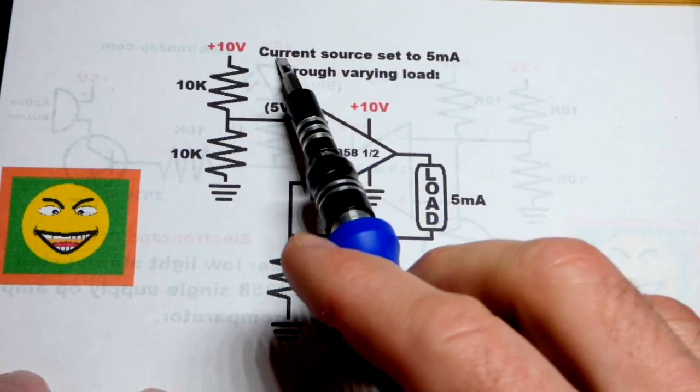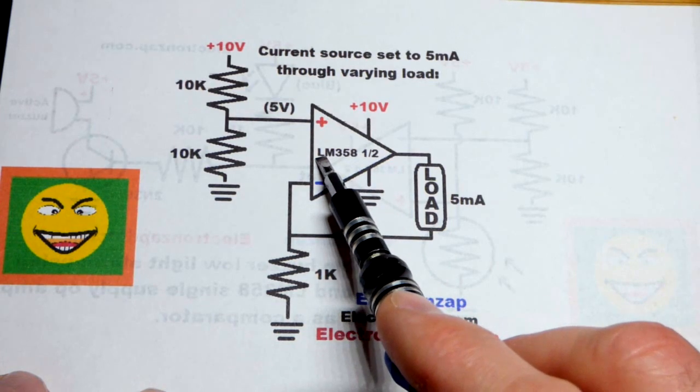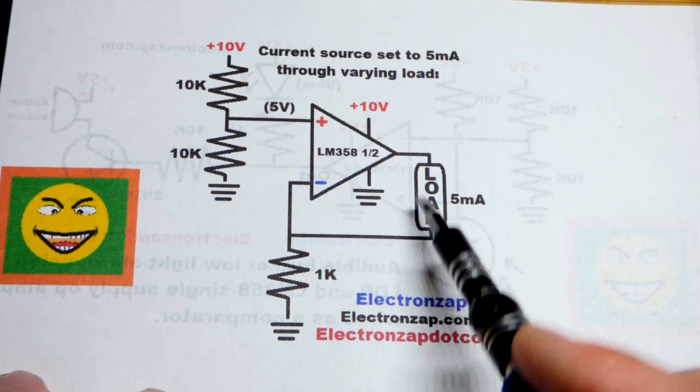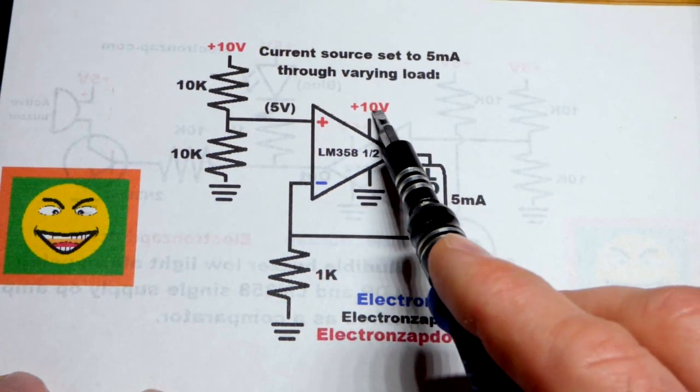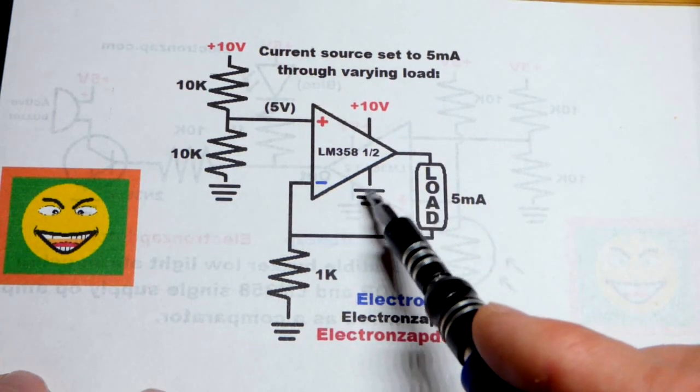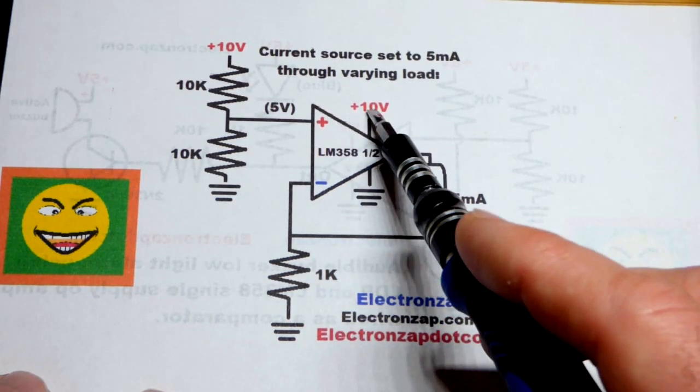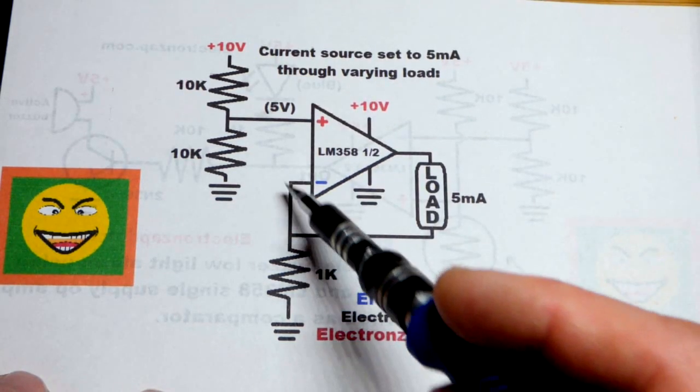So now in this video we're going to make a current source with an op-amp. This is a single supply op-amp, the LM358, and that means that we have positive on one side, negative on the other, and negative is ground.